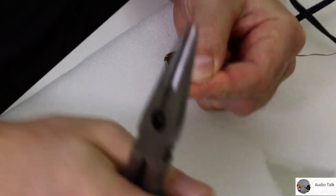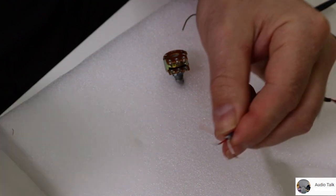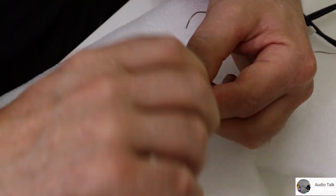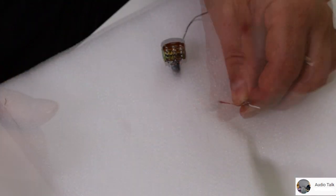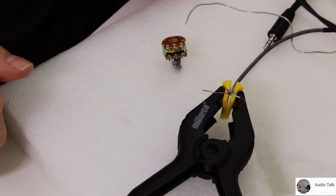We also need to remove some of the insulation from the two plus lines. They're going to be connected in the middle of the potentiometer. We're going to give that some solder.